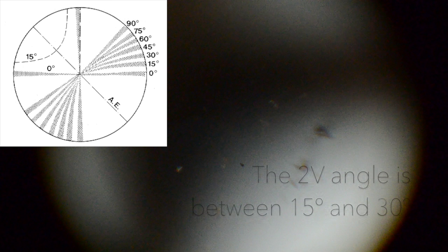Now let's determine the 2V angle. What do you think? Our isogyres are much more curved than the previous example, so the 2V angle is between 15 degrees and 30 degrees.